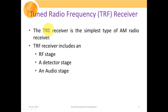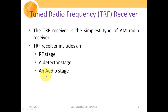The TRF receiver is the simplest type of AM radio receiver, consisting of very few components. A TRF receiver includes three stages: number one is the RF stage, which consists of the RF front end — that is the antenna as well as the RF amplifier. Second is the detector stage, comprising the demodulator circuitry. And finally, the audio stage, which amplifies the signal to drive the end devices so we can get our original message signal back.